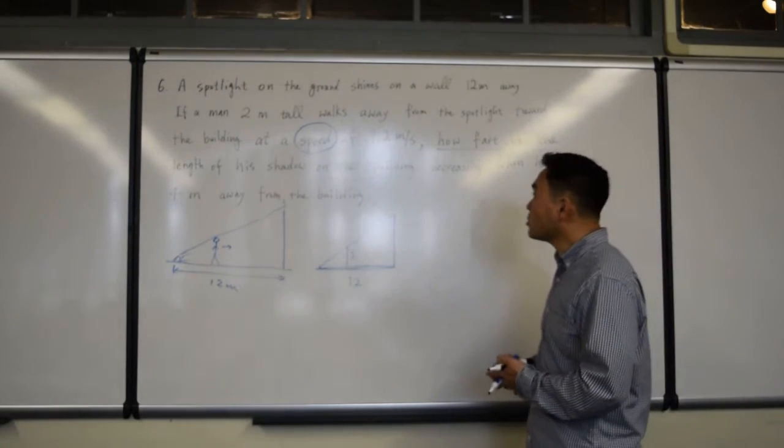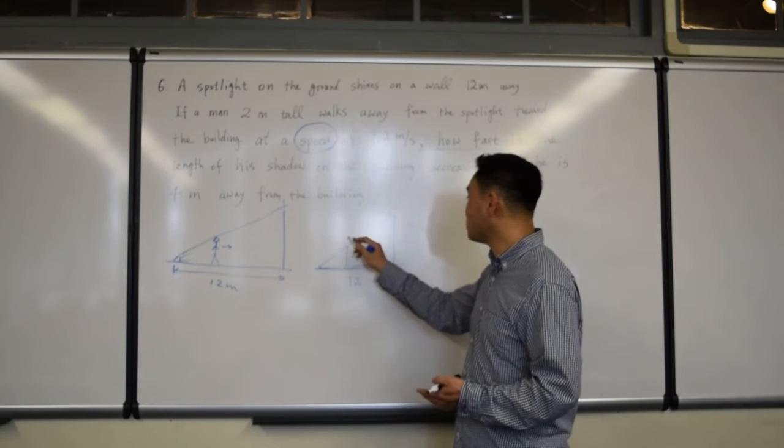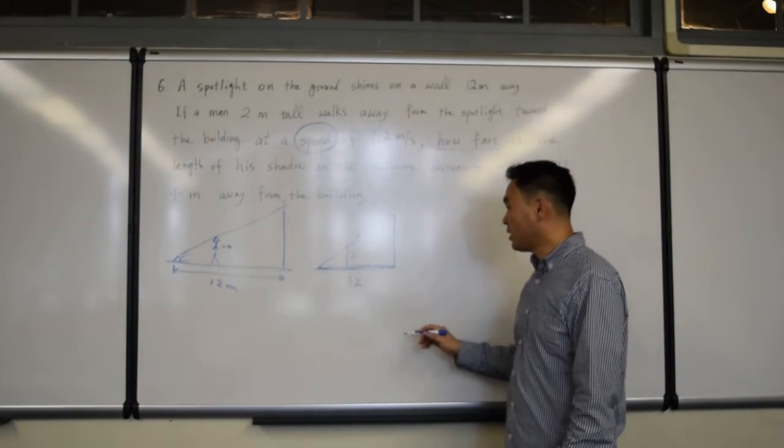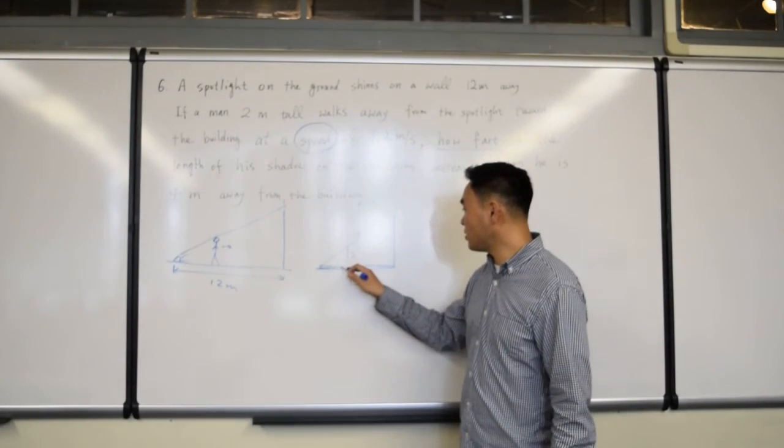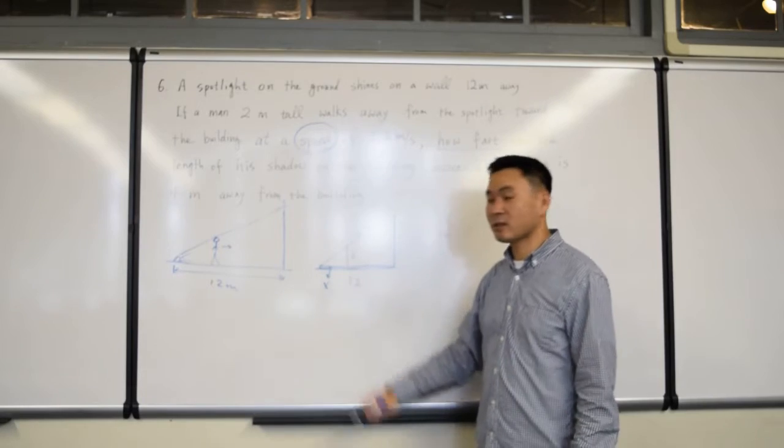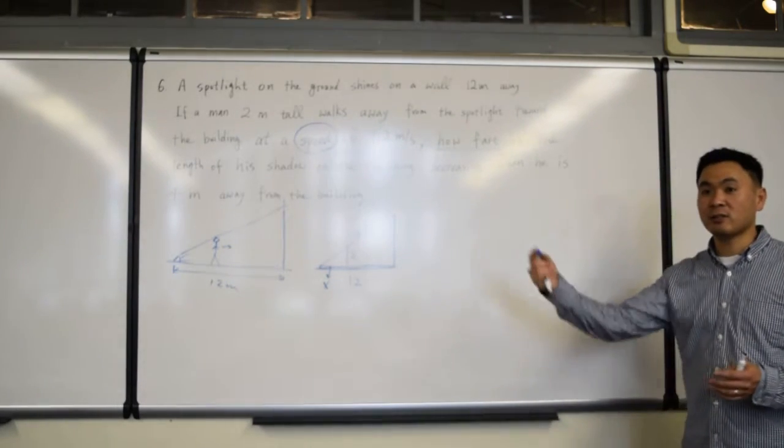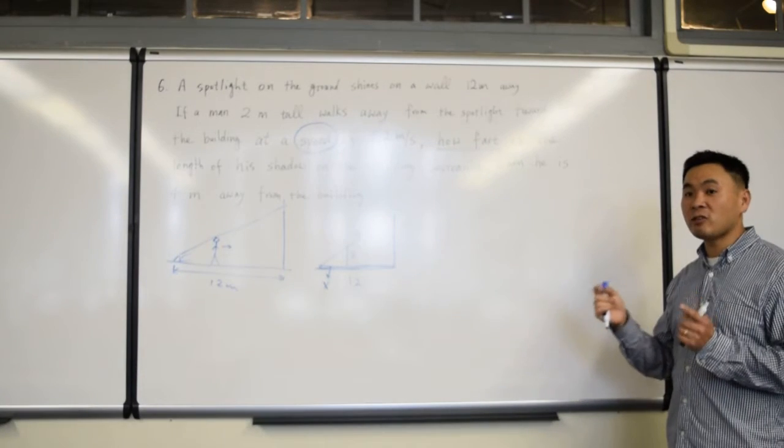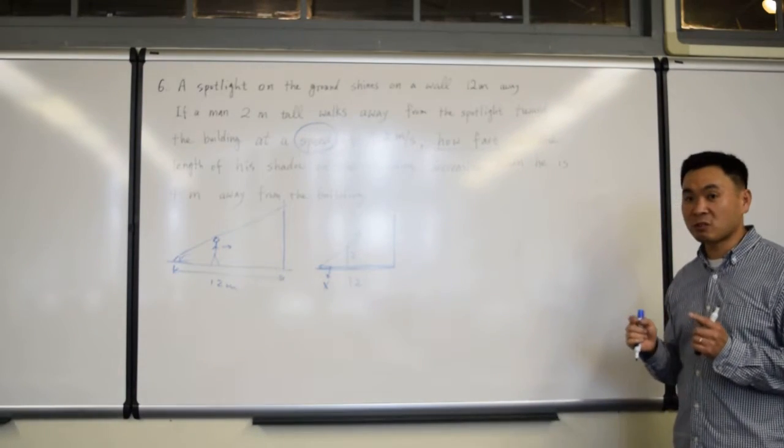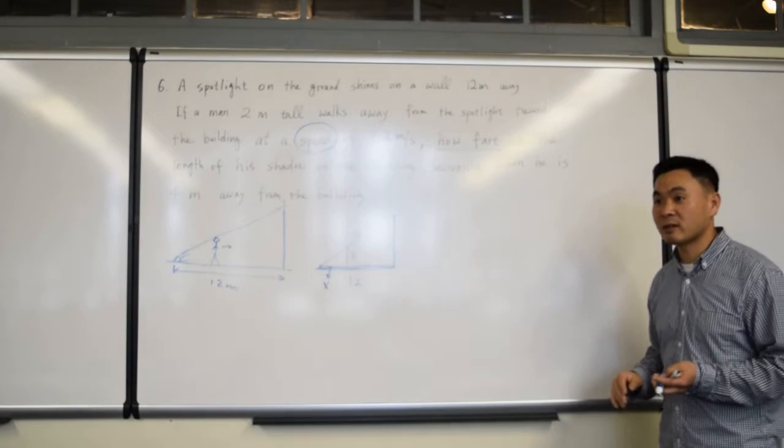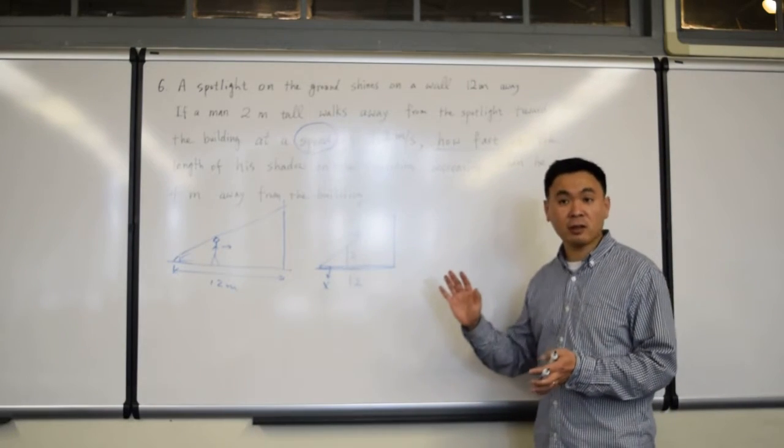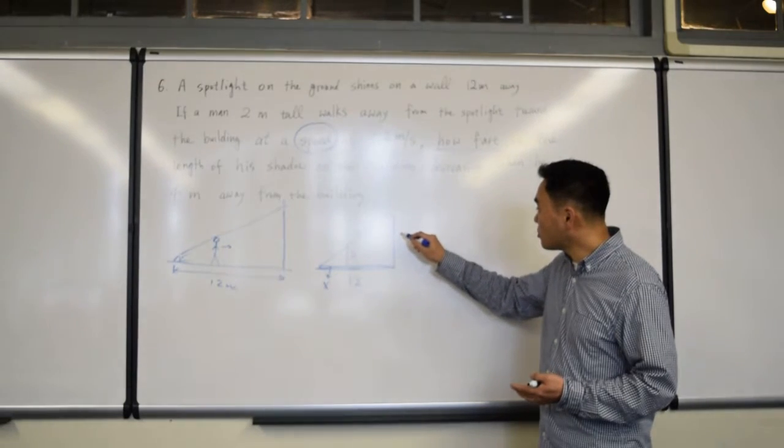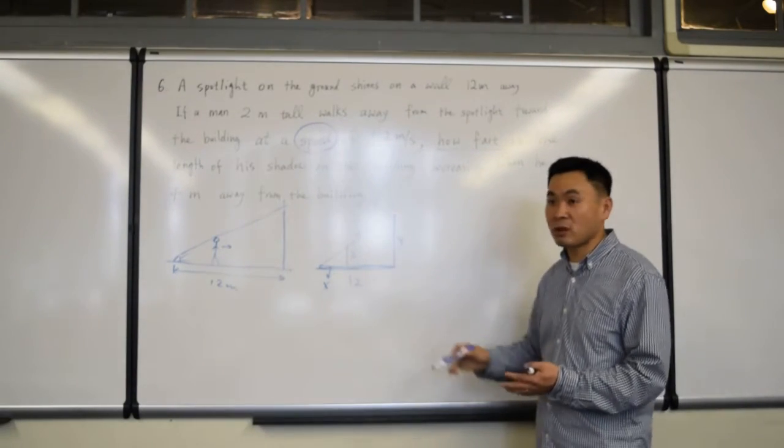So in order to talk about his speed, since he's moving that way, I guess you can keep track of his speed by putting this value here as x, okay? Because as he's moving, the x is going to increase, and the change of x is actually the speed that this man is walking. Is that good?